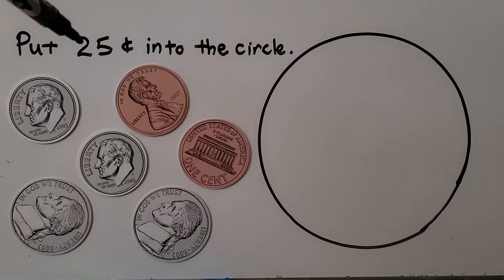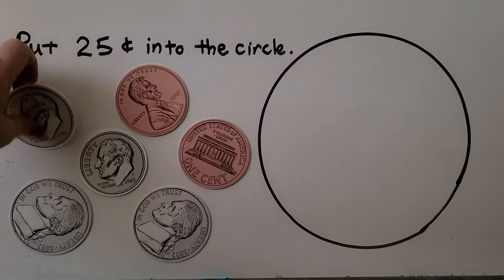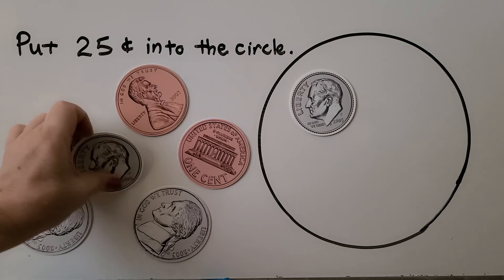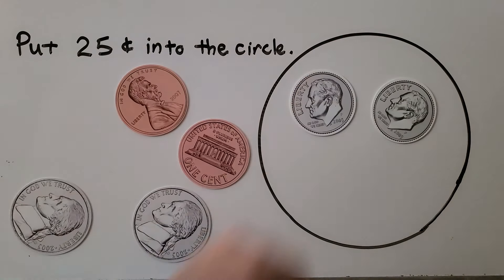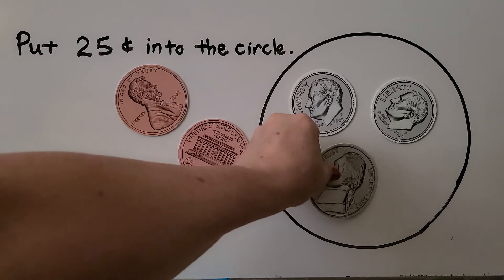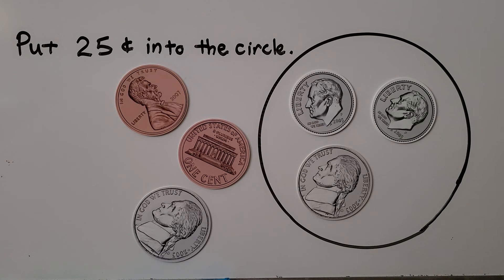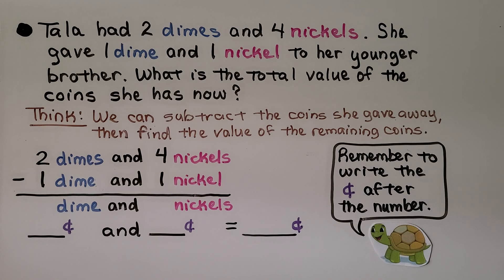Here it's telling us to put 25 cents into the circle. We need to put 2 tens and a 5 into the circle. The tens are dimes. We put one dime in the circle — that's 10 — and another dime — that's 20. Now we just need a 5 cents coin: if we put this nickel into the circle, we'll have 2 dimes and 1 nickel, and that's equal to 25 cents.